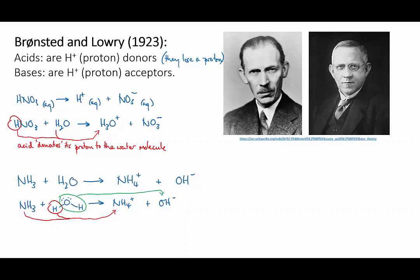So here is the reason why ammonia had the properties of a base without having any hydroxide ions of its own. Because it behaves, according to Bronsted and Lowry's definition, as a proton acceptor — it takes a proton from water, which leaves hydroxide ions left over. And so the solution is basic.